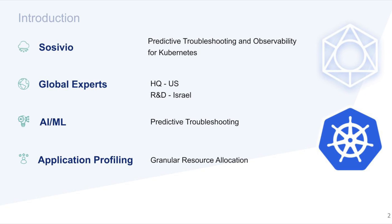Let me briefly introduce Sasevio. Sasevio is a predictive troubleshooting tool for Kubernetes applications and environments. We have domain experts both in AI and Kubernetes with several decades of experience in their respective fields. We are a globally remote company with our headquarters in San Francisco and our R&D team in Tel Aviv.